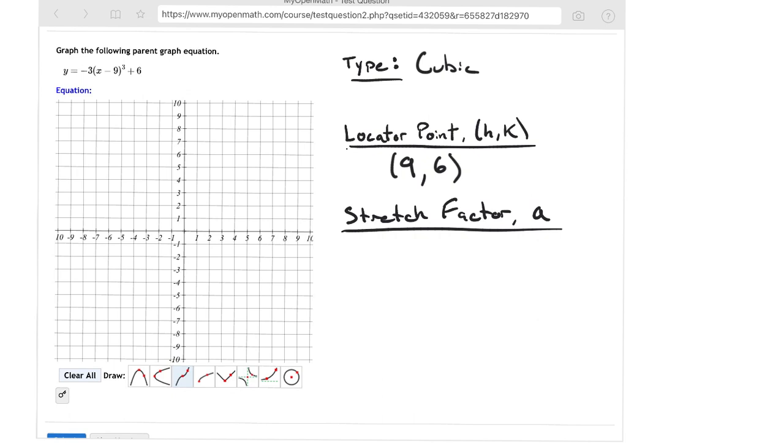After that, we look for the stretch factor, which is in front of those parentheses. So your a is equal to a negative 3.